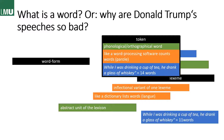And this happens on the parole level, if we go back to our very first lesson. An example would be the sentence 'while I was drinking a cup of tea, he drank a glass of whiskey' — that contains 14 words if you count it word by word, i.e., whenever there's a space in between, you get 14 words.